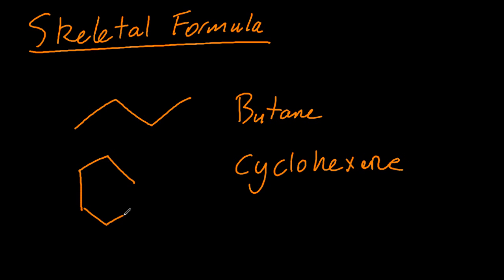Cyclohexene would be a hexagon, and the double bond is represented like that. Three lines would be a triple bond.